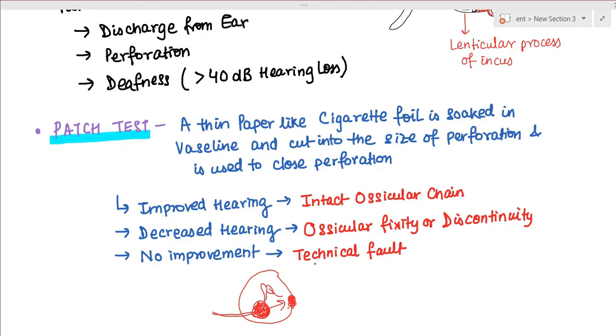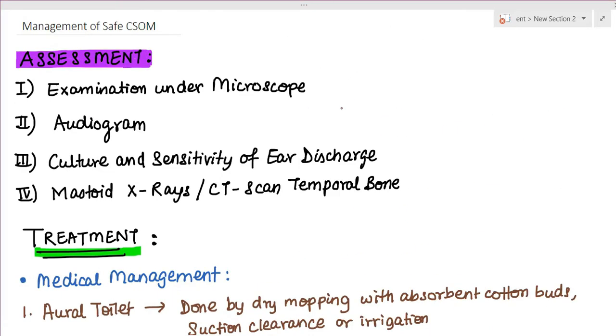For management of safe CSOM, first we have to assess the patient. We examine them with otoscope or microscope. The benefits of examining with microscope include seeing if there is any granulation tissue, the status of the ossicles, whether there is tympanosclerosis, and whether the squamous epithelial lining is coming in from the edge of perforation.